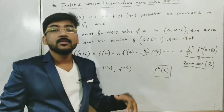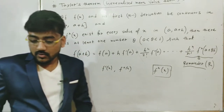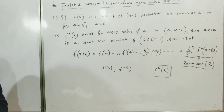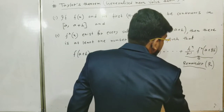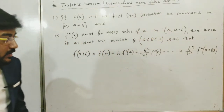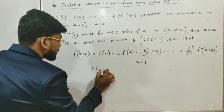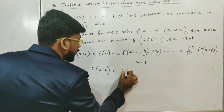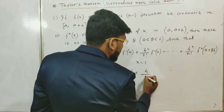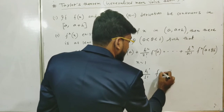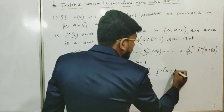We can reach from Taylor's theorem to Lagrange's mean value theorem, because this is the generalized mean value theorem. Let me put n = 1. If we put n = 1, we get f(a+h) = f(a) + (h/1!)·f′(a+θh), meaning this is the first-order differentiation with a+θh.